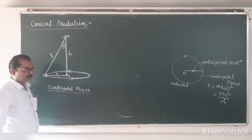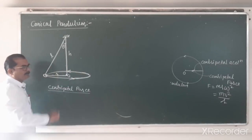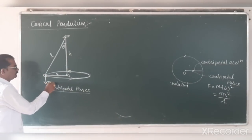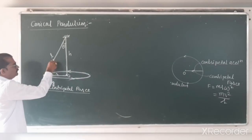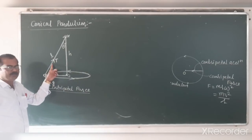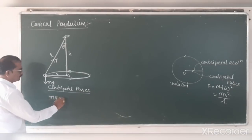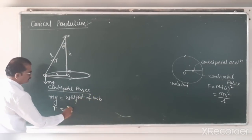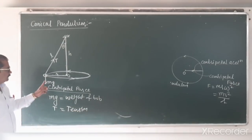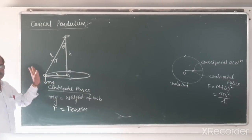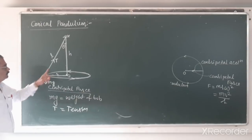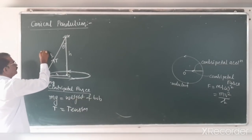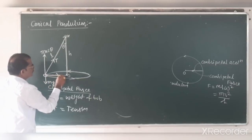How is this centripetal force obtained? When the bob is revolving in a horizontal plane, two forces are acting on it: one is the gravitational force, which is its weight mg in the downward direction, and the second is the tension in the string towards the point of suspension. We can resolve T into two components: the vertical component T cos theta and the horizontal component T sin theta.